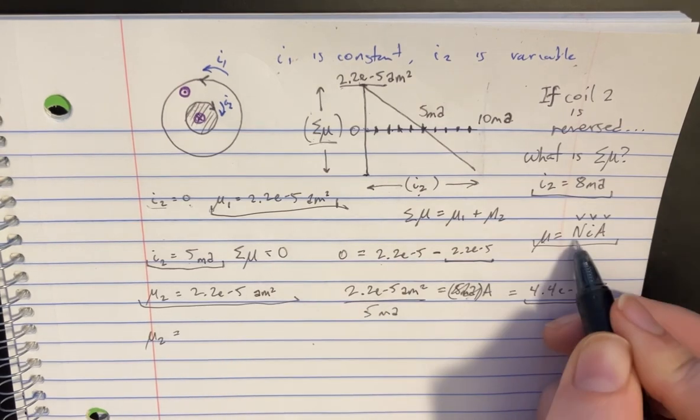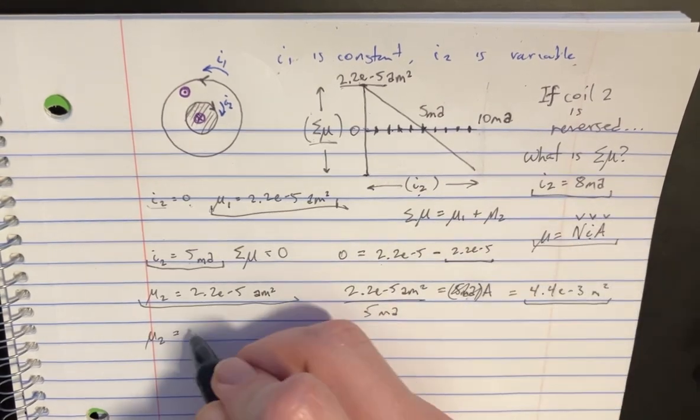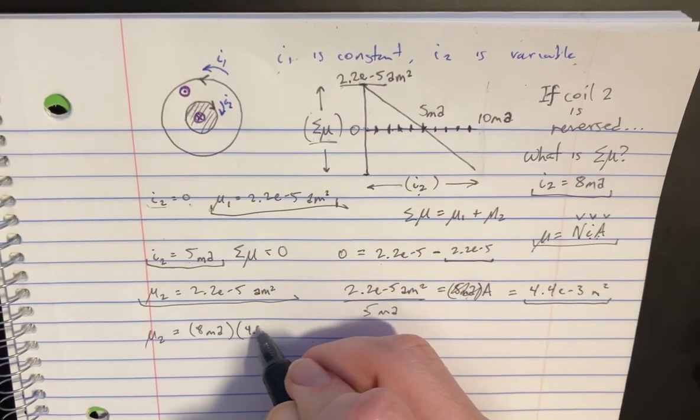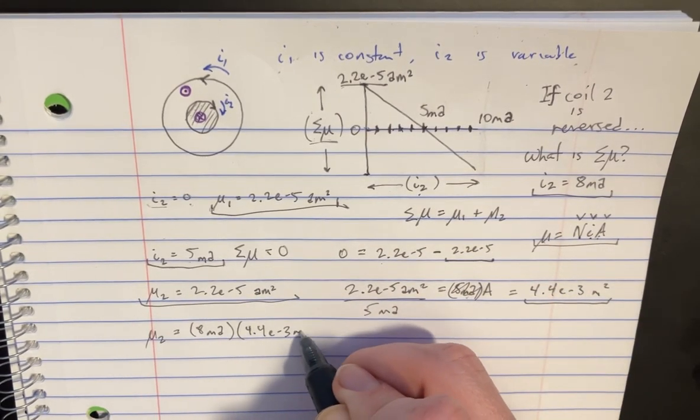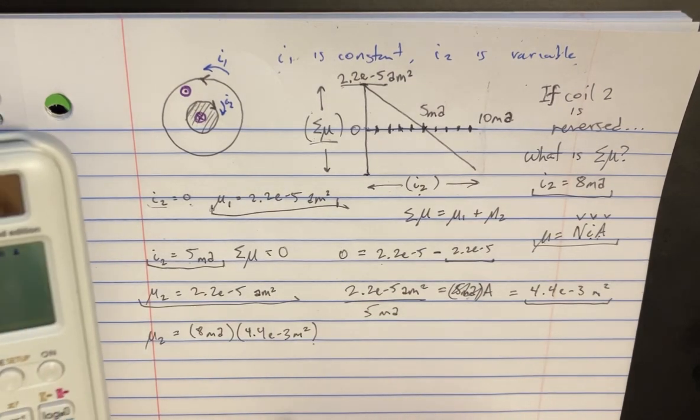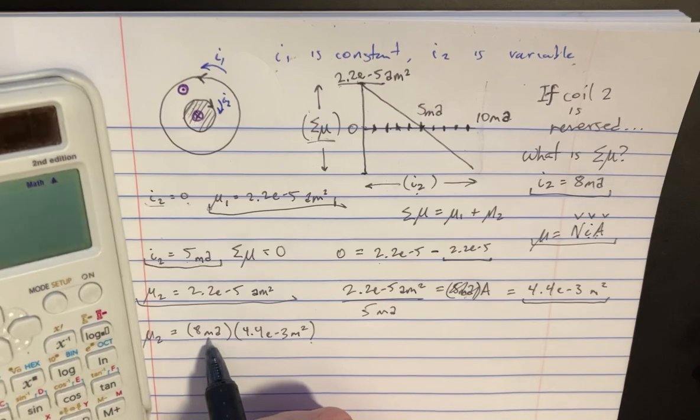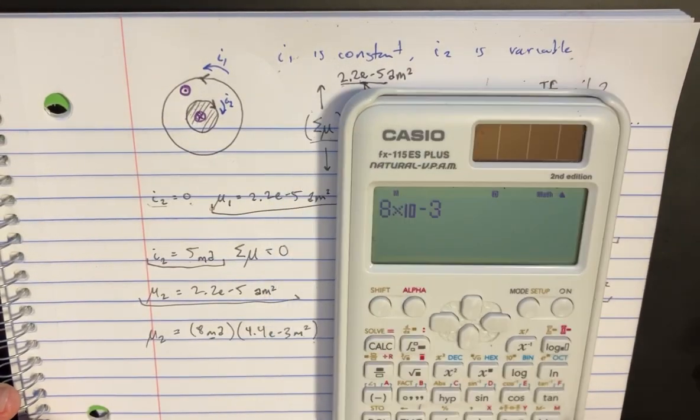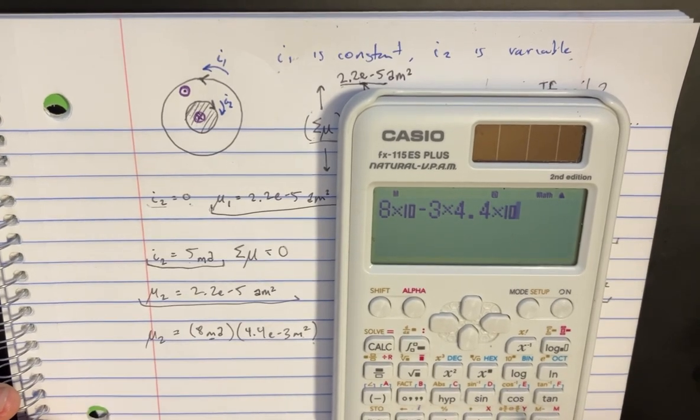That's just going to be one for the N, then we'll plug in eight for the I, and then we're going to get the area, which we already know is 4.4 to the negative third. This is milliamps, not meters, but eight to the negative third times 4.4 negative third.